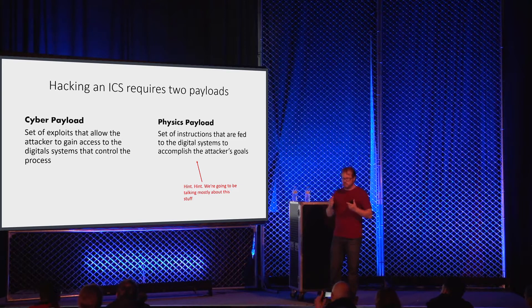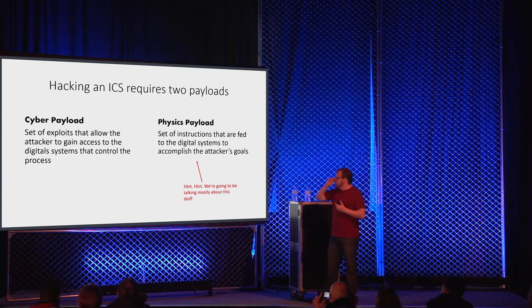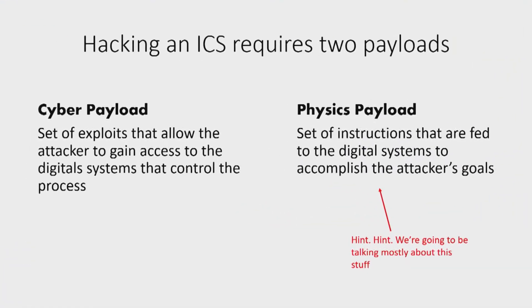When you hack into a process control system, you need two things. First, you need the cyber payload, which is the set of exploits that you use to break into it and get to the digital assets that are going to control the system.